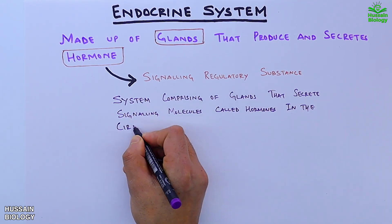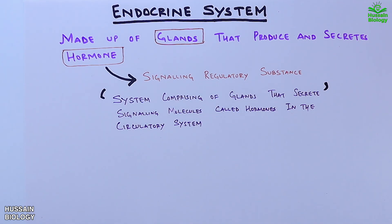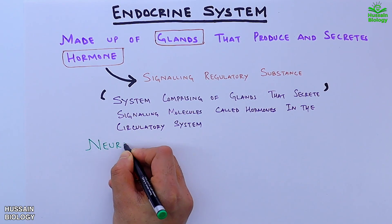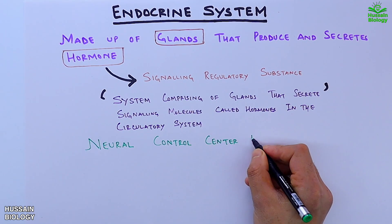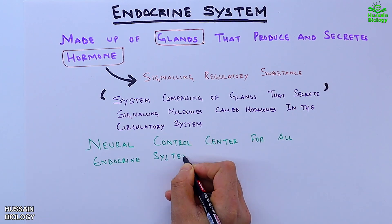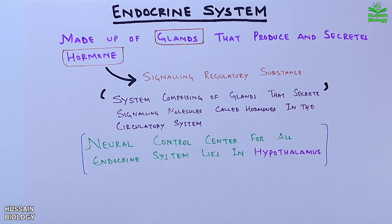It must be noted here that the neural control center for the endocrine system lies within the hypothalamus.